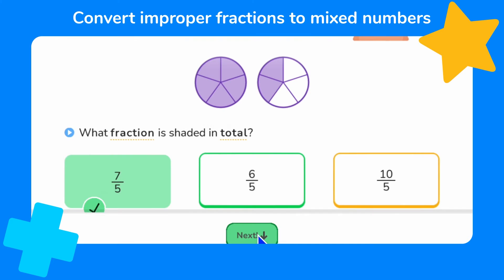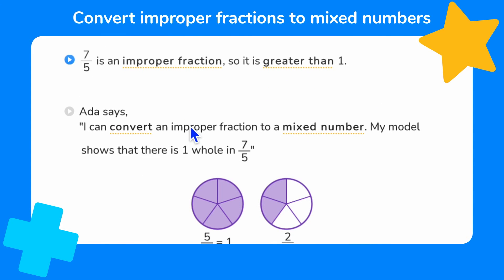Great, that's another star. 7 fifths is an improper fraction as the numerator is greater than the denominator. This means that the fraction is greater than or more than 1.